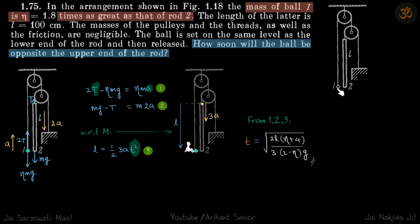In this arrangement we have a ball and a rod. We are asked how soon will the ball be on the opposite end of the rod. It's quite similar to the previous problem except that here the ball is not sliding, so this problem is actually easier than the previous one.